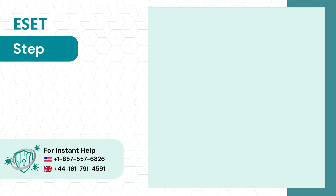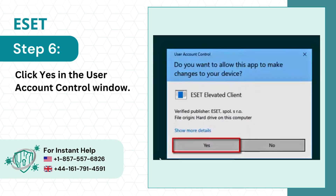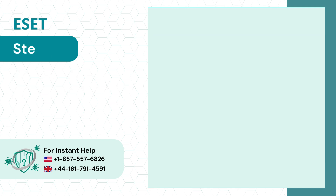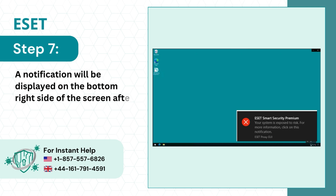Step 6: Click Yes in the User Account Control window. Step 7: A notification will be displayed on the bottom right side of the screen after the program is disabled.